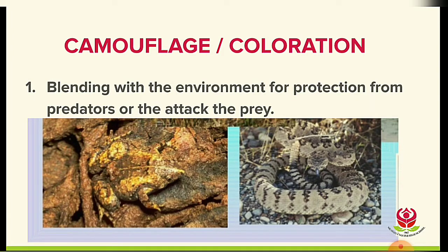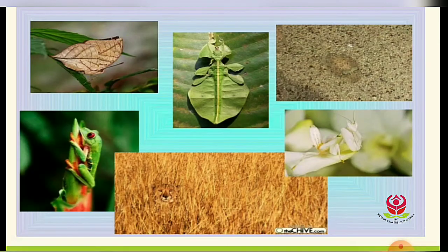You can see examples here: a frog blending its color with the environment, a snake, a butterfly, and a lion — all blending with their surroundings. These are examples of camouflage.